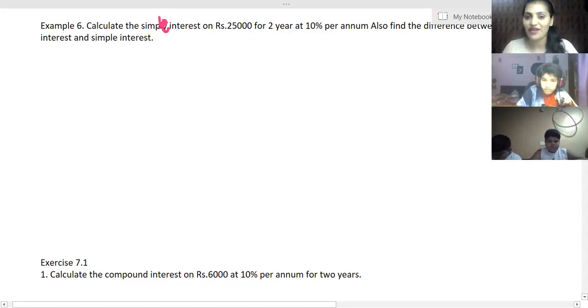Calculate the simple interest on rupees 25,000 for two years at 10 percent. For the next question, also find the difference between the compound interest and the simple interest. So you have to calculate compound interest, okay? So first of all...